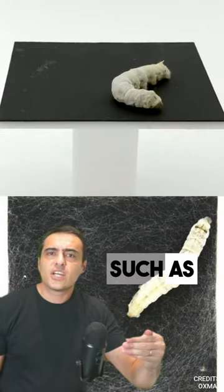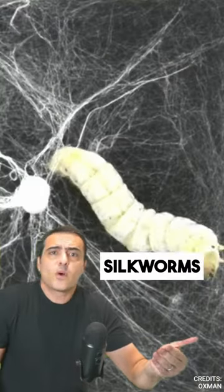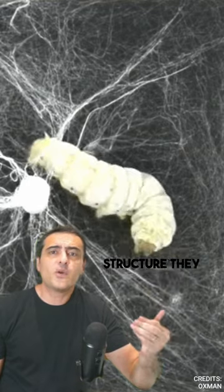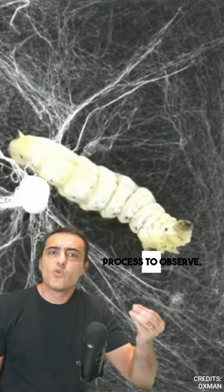Influenced by environmental factors such as gravity, heat, and light, these silkworms determine the density of the structure they weave. It's a fascinating process to observe.